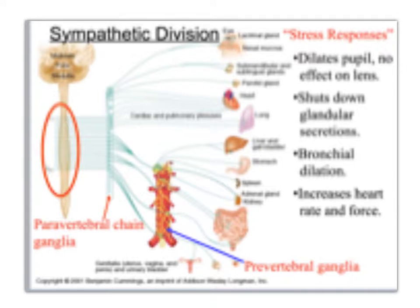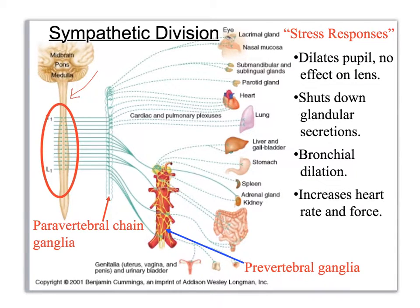Pretty much every textbook has a variation on this figure, where you're looking at your spinal cord and I've put a circle around the thoracolumbar region showing where the origins of the cell bodies for the preganglionic axons are. Then you see the axons come out. This structure is actually anterior to the aorta — so technically the spinal cord, then the bodies of the vertebra, then the aorta, and then the mess.